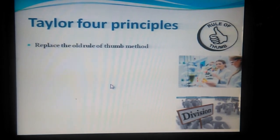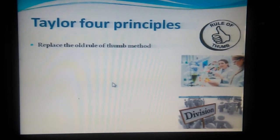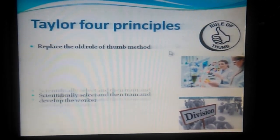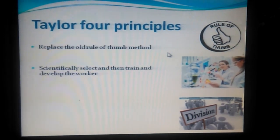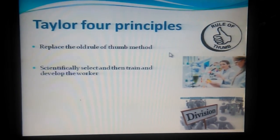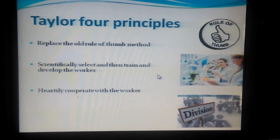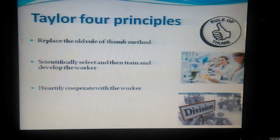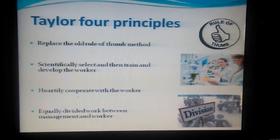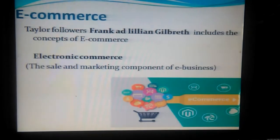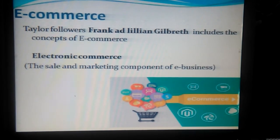Taylor gave four principles of scientific management: first, replace the old rule-of-thumb method; second, scientifically select, then train and develop the worker; third, cooperate with the workers; and fourth, equally divide work between management and workers. In scientific management, Taylor also included contributions from Frank and Lillian Gilbreth.